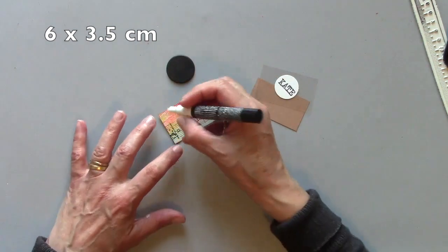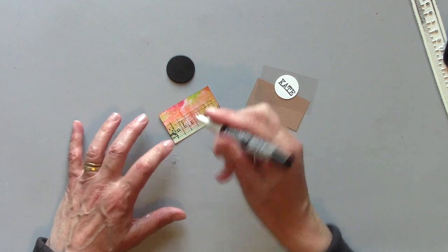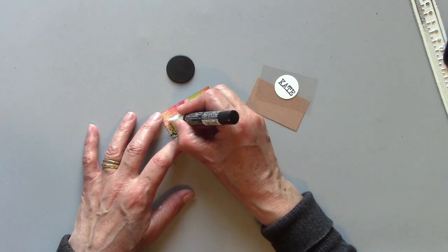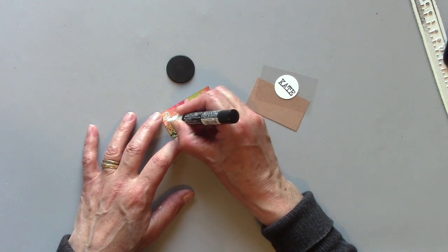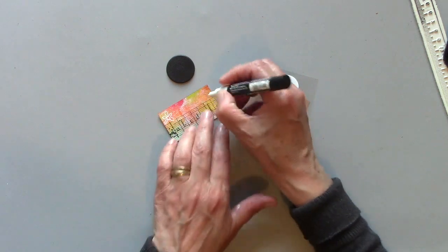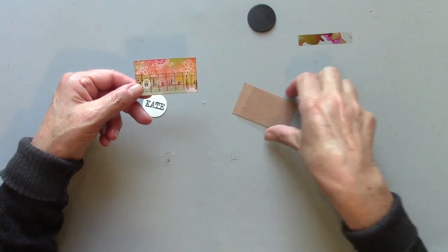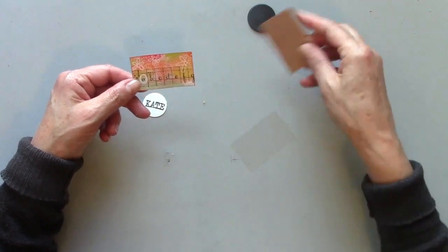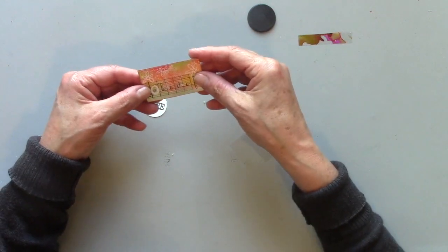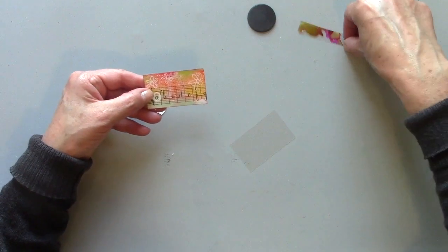I'm going to add a little bit of doodling with the white pen. This will be underneath that top layer of the clear film, so it should kind of protect it.